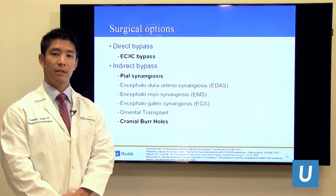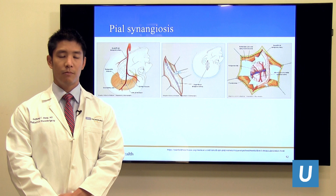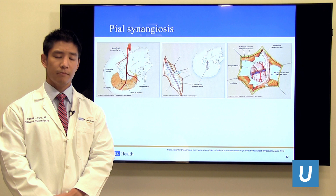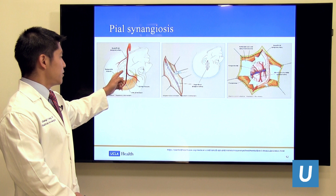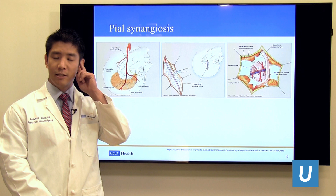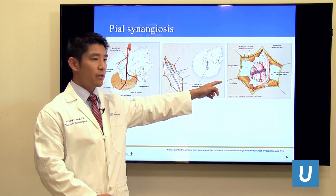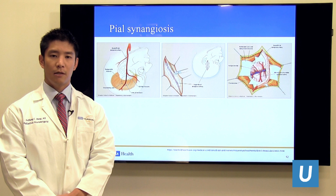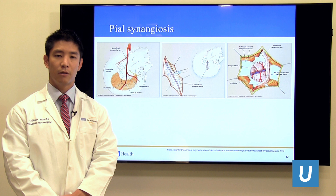This is an example of the most widespread indirect bypass technique used in America — it's called a pial synangiosis, pioneered by Dr. Scott at Boston Children's. It involves using the superficial temporal artery, the artery that provides the pulse just in front of your ear. You isolate that artery, open up a small window of bone, and lay that artery directly onto the surface of the brain, opening up some of the overlying tissue to allow the body to create new blood vessels supplied through the superficial temporal artery on its own.